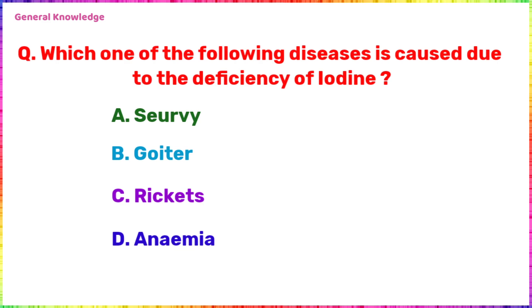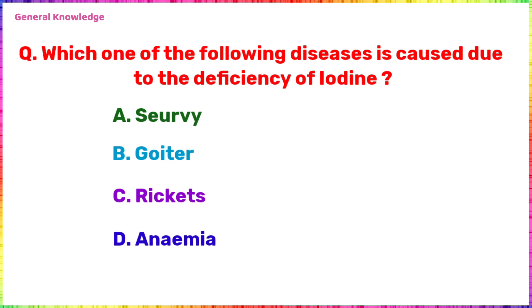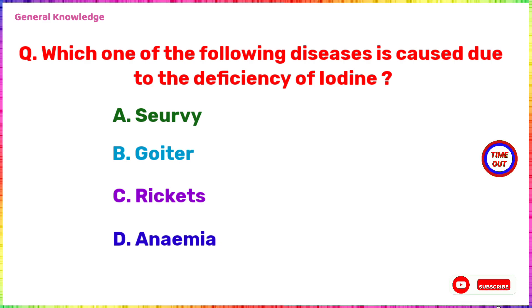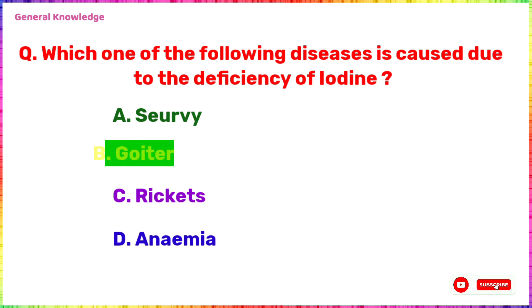Which one of the following diseases is caused due to the deficiency of iodine? The correct answer is option B, goiter.